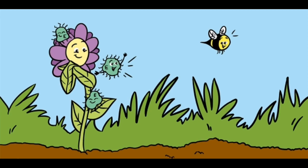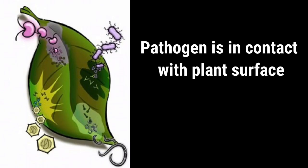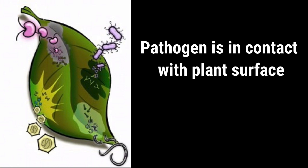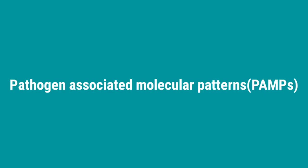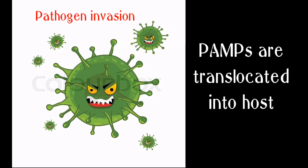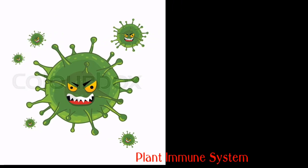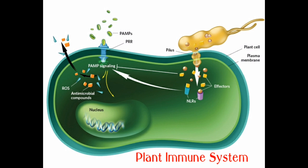During plant-pathogen interaction, a cross-linking biochemical reaction takes place between plant and pathogen. The initial reaction occurs when the pathogen is in contact with the plant surface and it starts to secrete some non-protein and protein effectors called pathogen-associated molecular patterns. Pathogen invasion is successful when these patterns are translocated into the host, suppressing the plant's immune system and enabling the penetration and establishment of the pathogen.